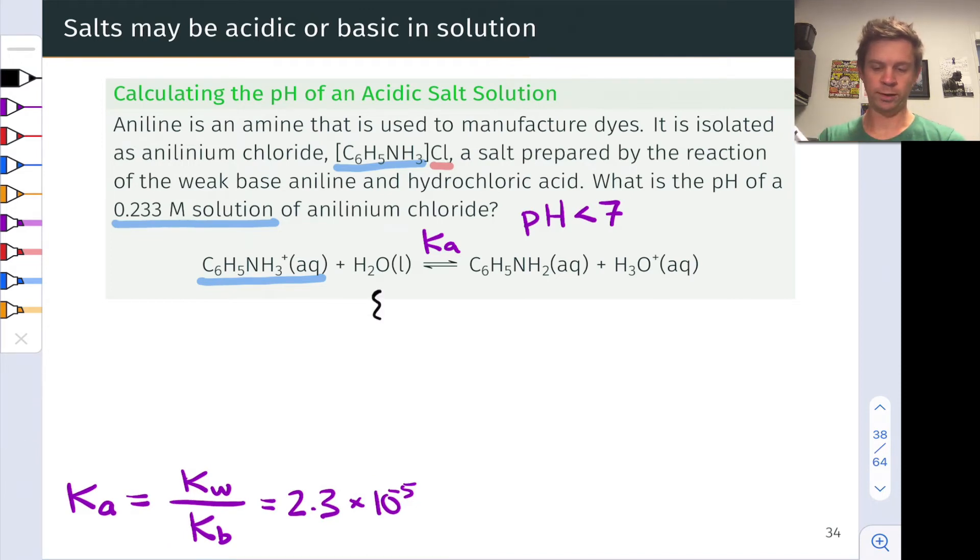We have water, which we can completely ignore on the reactant side there. And we have initial change and equilibrium lines that we're going to worry about here. Our initial concentration of the anilinium chloride was 0.233 moles per liter. And so we can think of this as the initial or total concentration on that I line of the ice table.